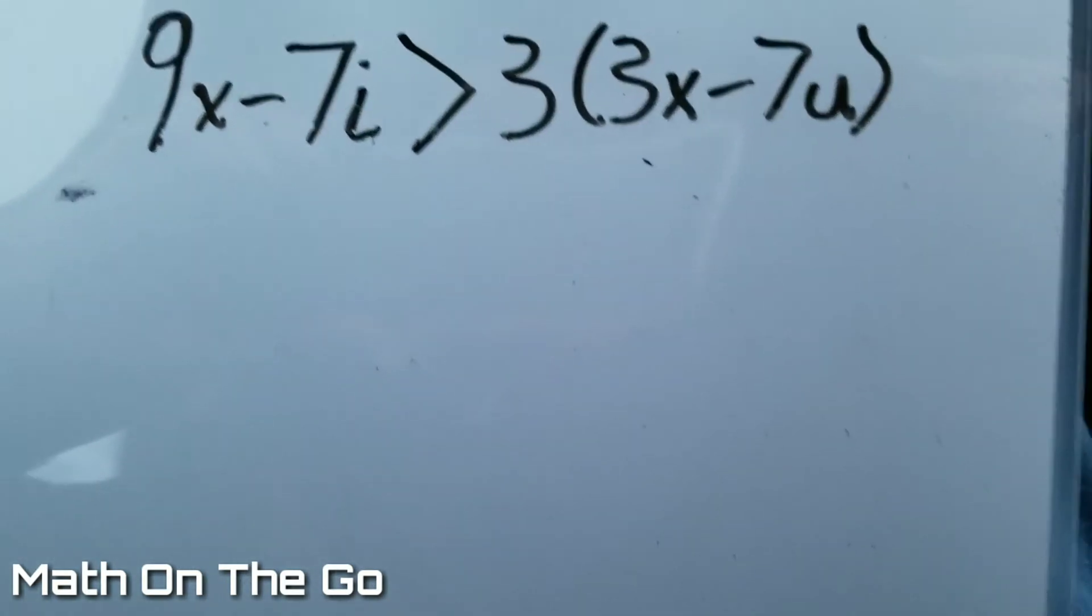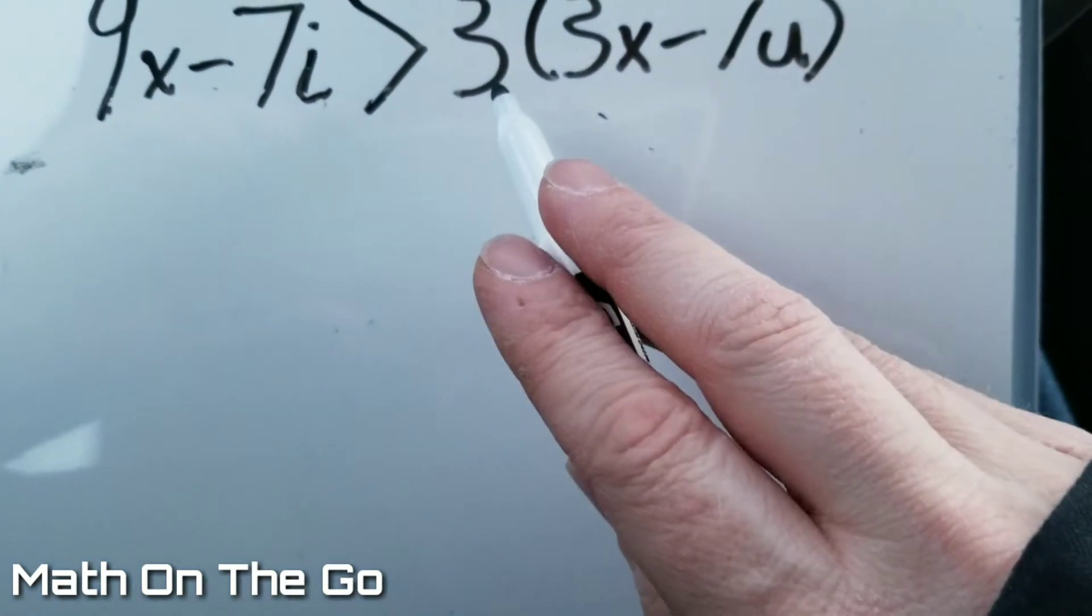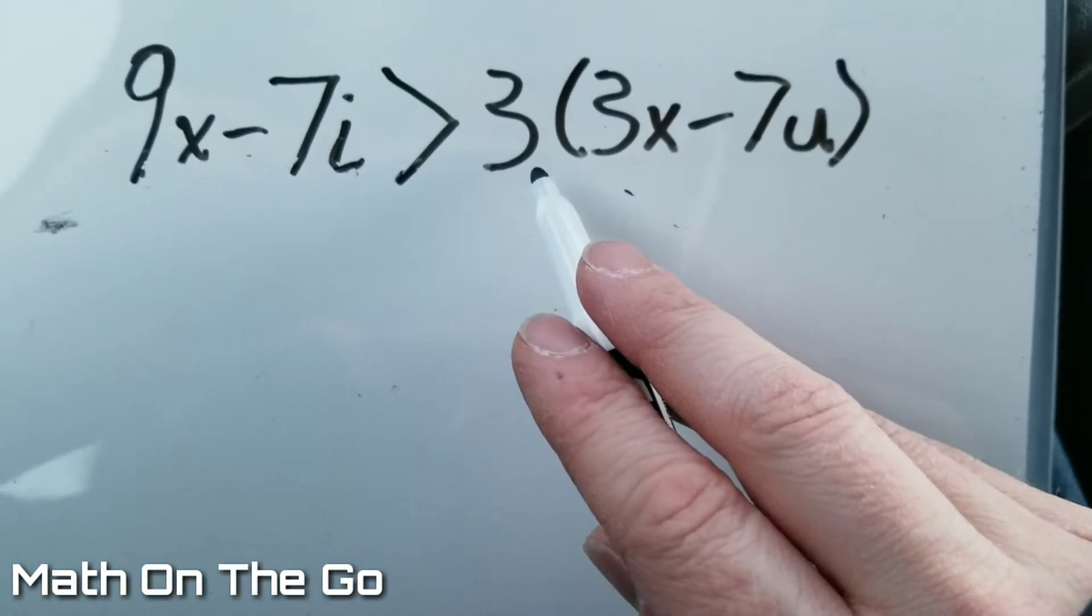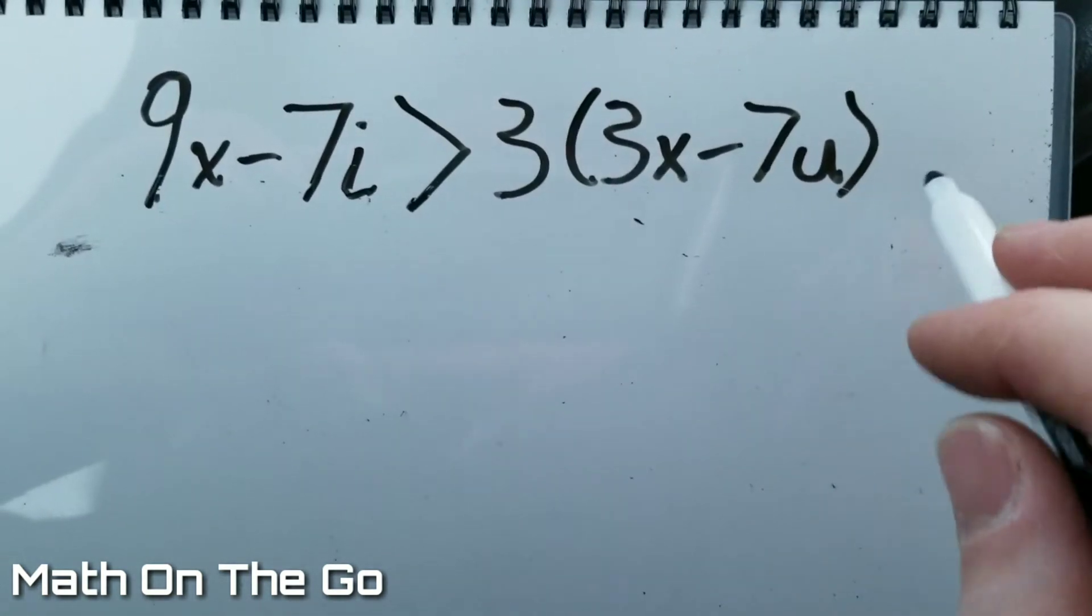So the first thing we're going to do is we're going to multiply our 3 here across the 3x minus 7u.